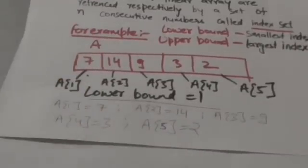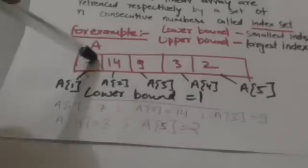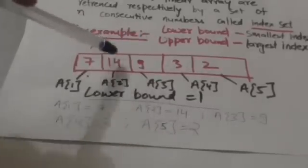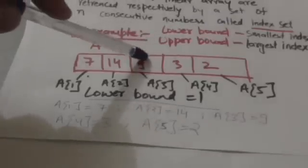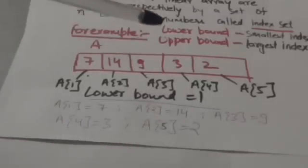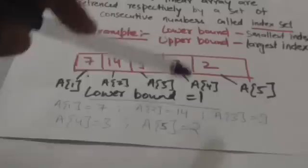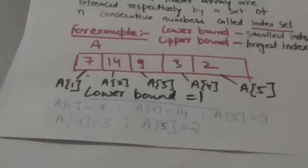So in this case, A1 is equal to 7, A2 is equal to 14, A3 is equal to 9, A4 is equal to 3, and A5 is equal to 2.